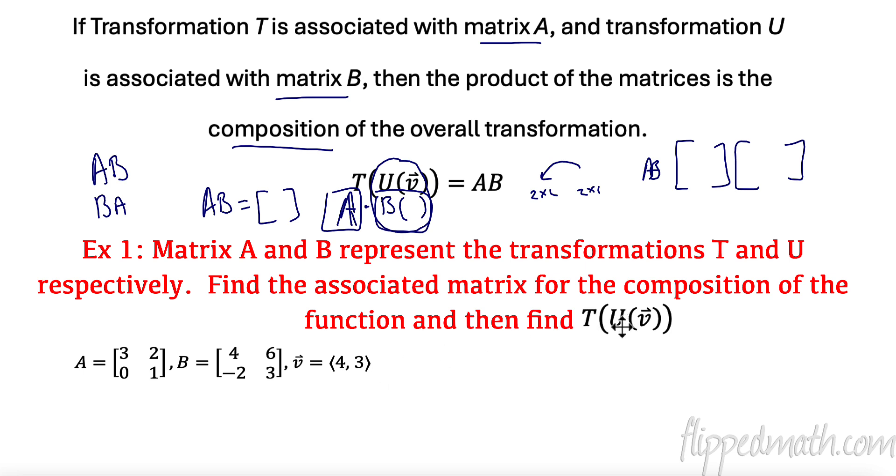So if we look at this, we're doing U times my vector. So that means, remember, U is B. So that means I'm doing 4, 6, negative 2, 3, and I'm going to multiply it by my vector, 4, 3. And whatever I get, then I'm going to multiply it by A, 3, 2, 0, 1.